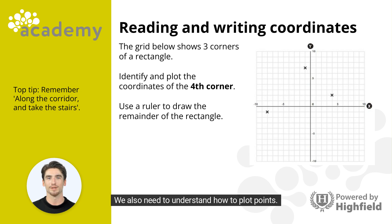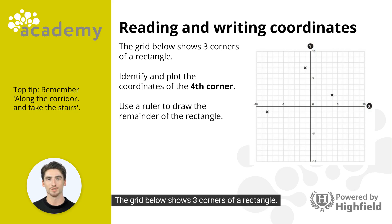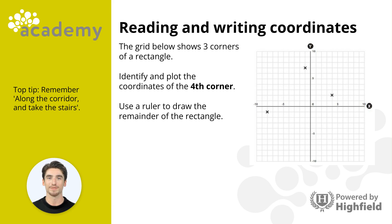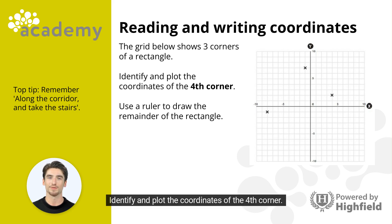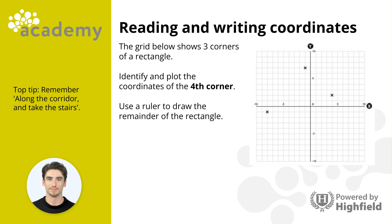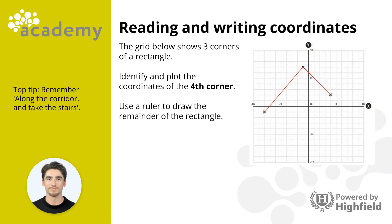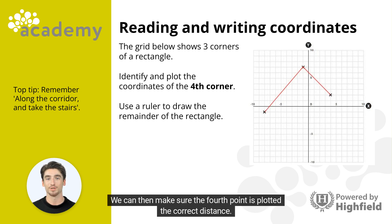We also need to understand how to plot points. Let's look at an example. The grid below shows three corners of a rectangle. Identify and plot the coordinates of the fourth corner. First, let's use a ruler to join up the points of the rectangle we've already been given — this will help us understand where the final point needs plotting.